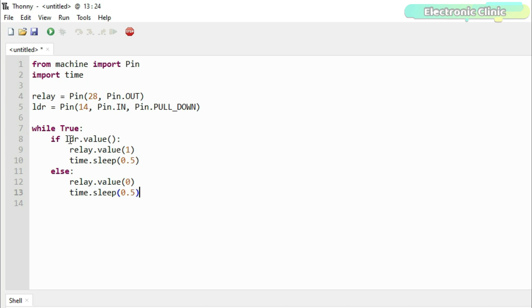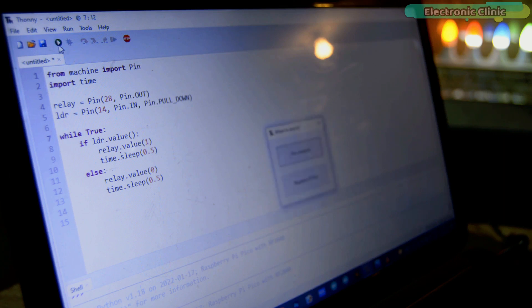Finally, we use an if condition to check if the output on the LDR sensor module is high or low. So if the Pico body takes a high signal, then the relay is turned on. Else, the relay is turned off. Now let's go ahead and run this code.